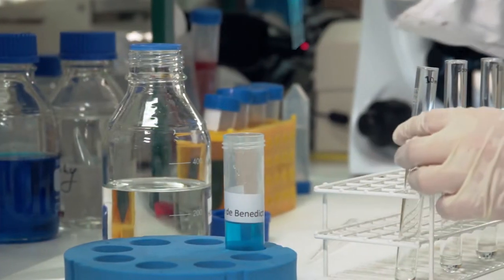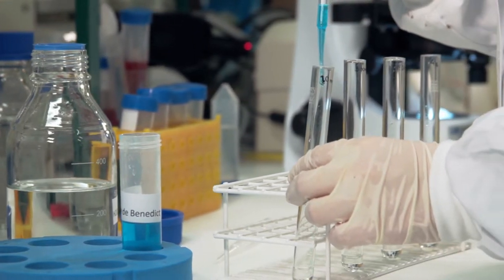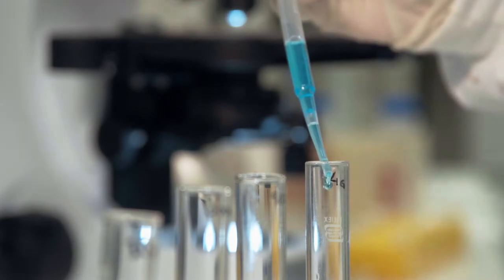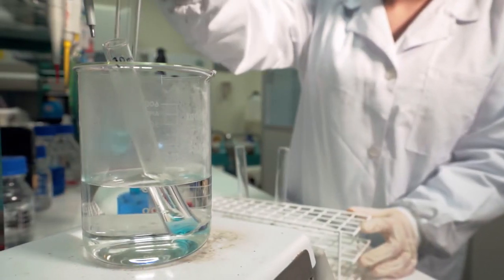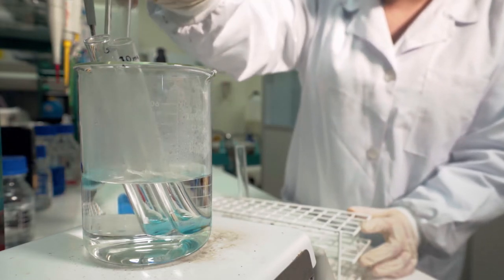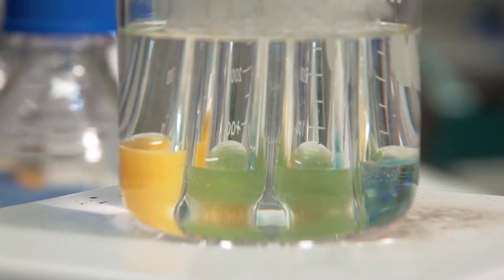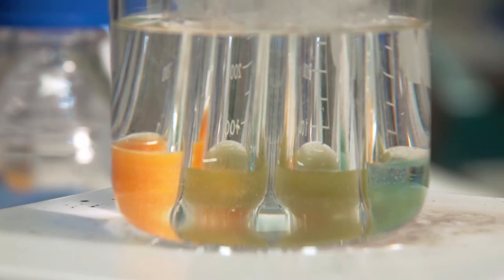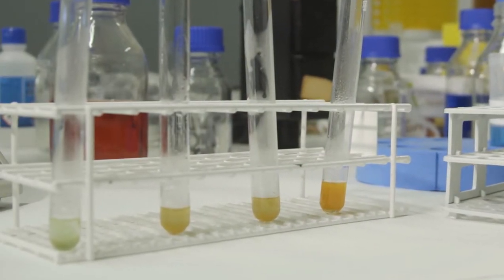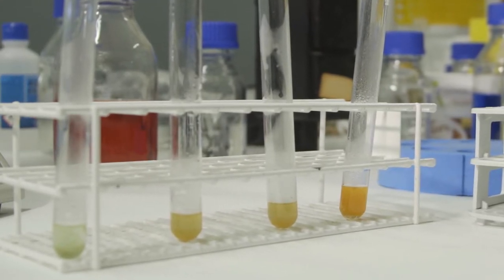Em seguida, adicionamos 10 gotas de reagente de Benedict a cada tubo que preparámos anteriormente. Num gobelé grande, colocamos água até metade e aquecemos até levantar fervura. Colocamos os tubos em banho-maria até se verificar uma mudança de cor. Com os tubos ordenados por ordem crescente de concentração de frutose, construímos uma escala de cor.